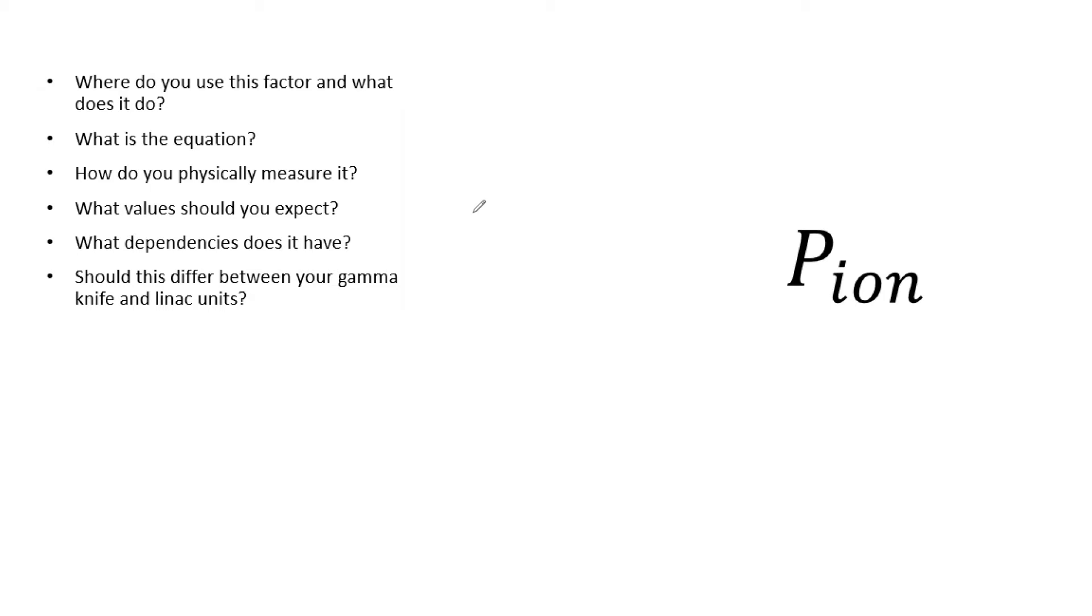So a question may be simply providing P ion and say where do you use this factor, what does it do, what is the equation to calculate this, how do you physically measure it, what values should you expect, what dependencies does it have, and should this differ between your gamma knife and LINAC units?